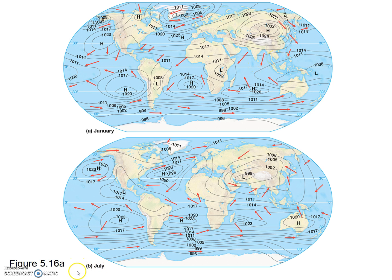Now look at the July map. The subtropical high pressure cells still exist over the oceans, and they have shifted northward a bit, as we would expect. But look where the subtropical high in southern Asia used to be — in the same location, there now exists an extremely low pressure cell.